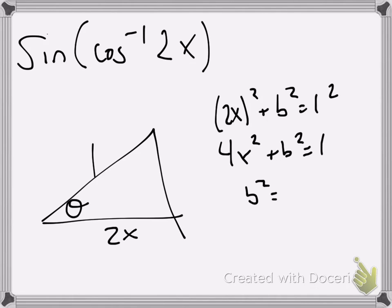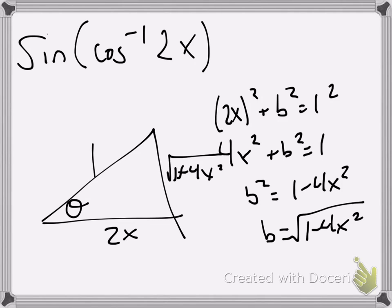b squared is 1 minus 4x squared, which means b is the square root of 1 minus 4x squared. Sine is opposite over hypotenuse. The sine of the cosine inverse of 2x will be the square root of 1 minus 4x squared.